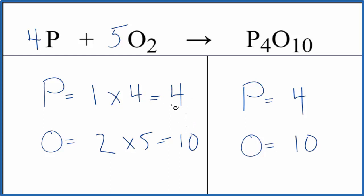If you need to write the states, phosphorus would be a solid. Oxygen, that's a gas. And then this P4O10, tetraphosphorus pentoxide, that will also be a solid.